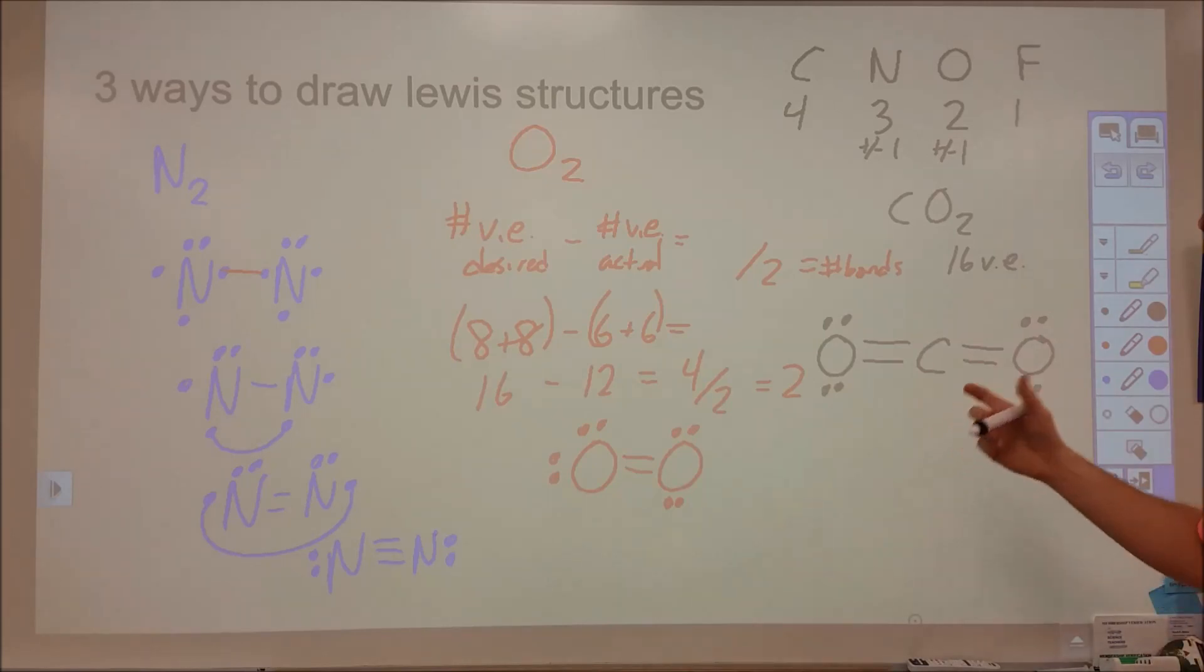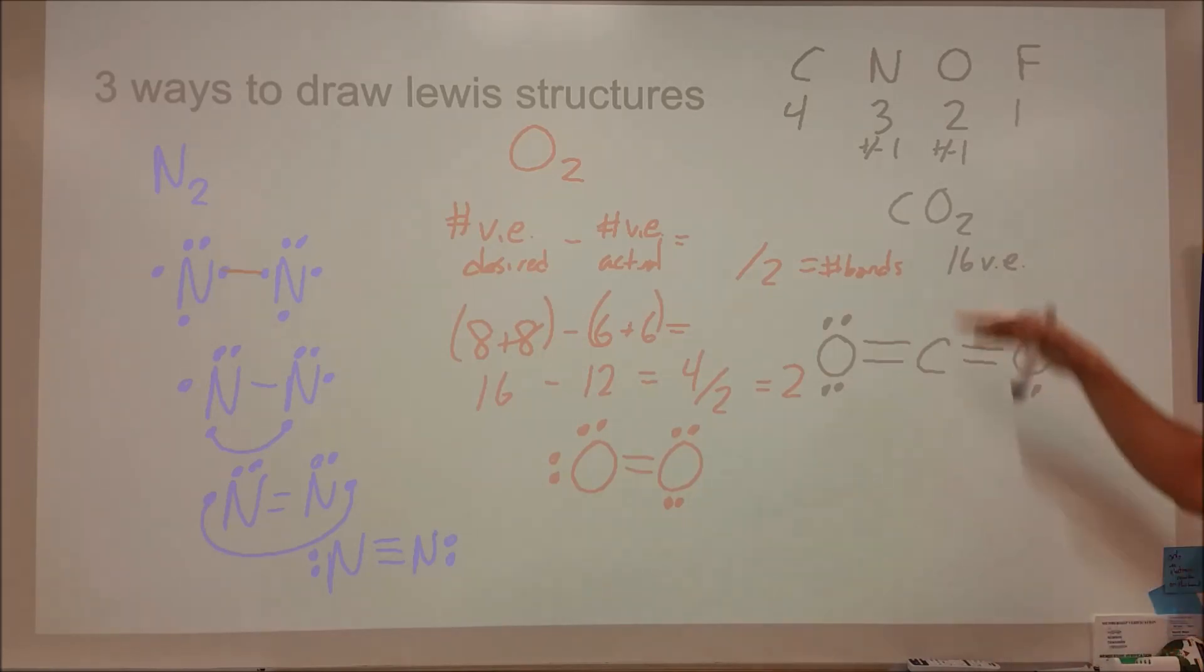Now again, these are all methods, and together, knowing all 3 gives you a good chance of putting together a good Lewis structure, but as they get to the point where they start to not follow the octet rule, which is pretty soon, then this is going to kind of give you some sense and intuition into how those Lewis structures are going to form, in particular this one here.